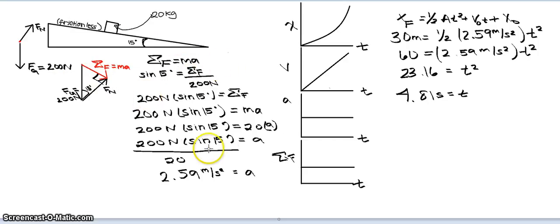For the first part, we're trying to look for acceleration. To find acceleration, we would need to know what the net force is first. To find that force, it would be sine of 15 degrees is equal to the net force over 200 newtons. Because sine is opposite over hypotenuse.